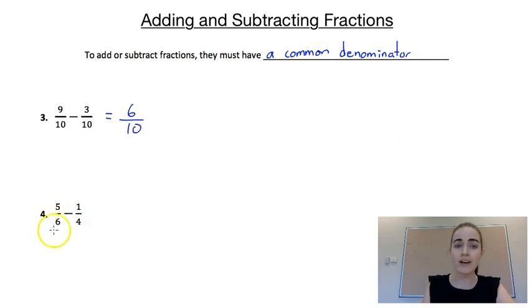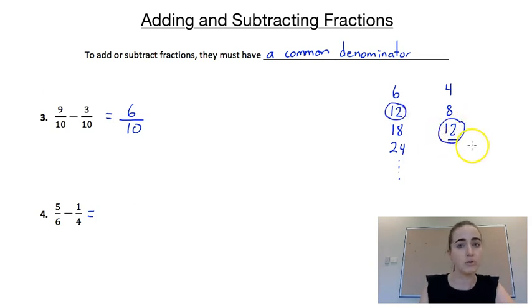Now for the last one, they don't have a common denominator, so we're going to have to manipulate them so they do. So if we write down the multiples of 6, we'd have 6, 12, 18, 24, and it would keep going. The multiples of 4 would be 4, 8, 12, and I can stop there because we've got 12 in both lists. That's what our lowest common multiple is.